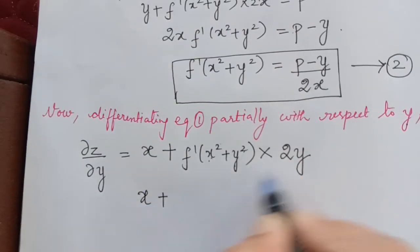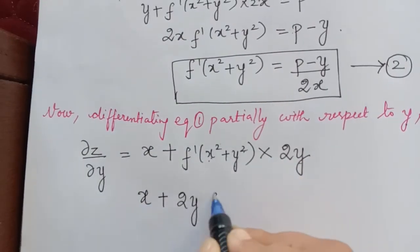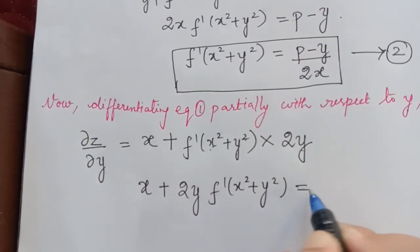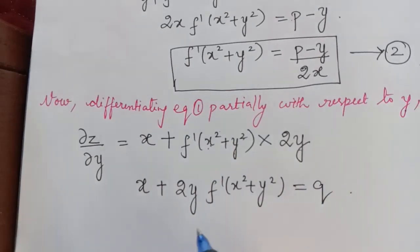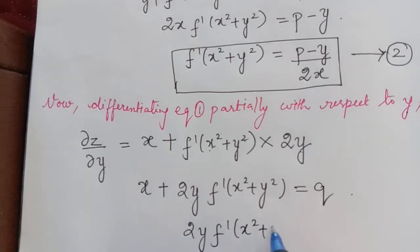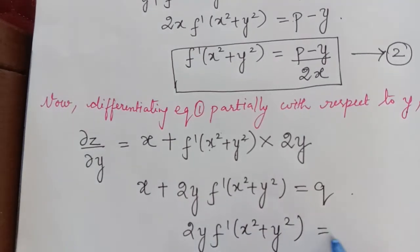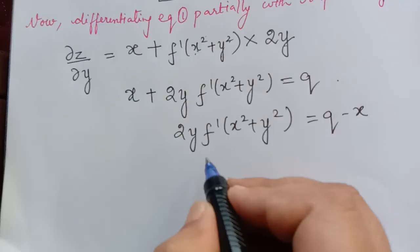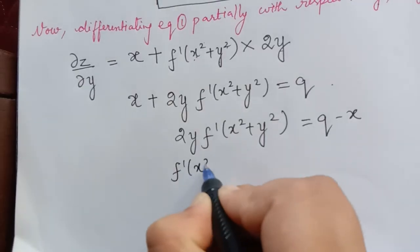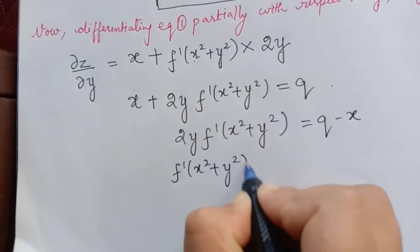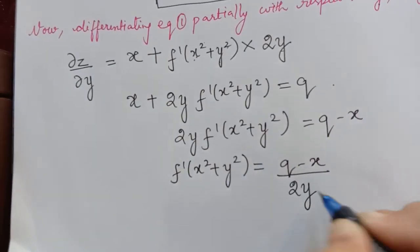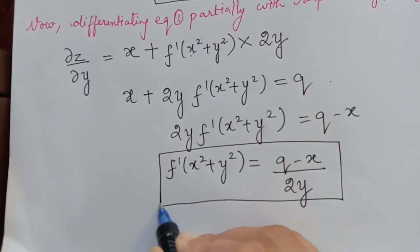So we have: x plus 2y · f dash(x squared plus y squared) equals q. From this, 2y · f dash(x squared plus y squared) equals q minus x, so f dash(x squared plus y squared) equals (q minus x) divided by 2y. Let us mark this as equation 3.